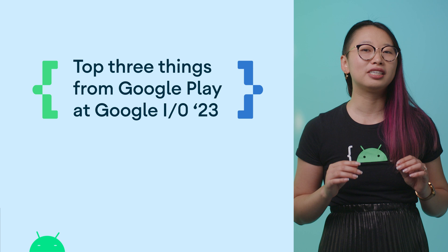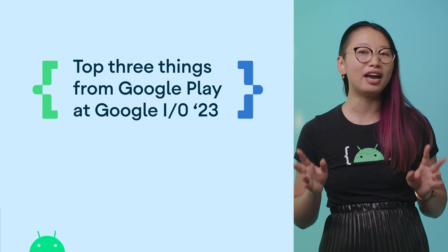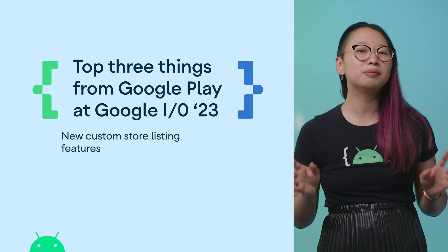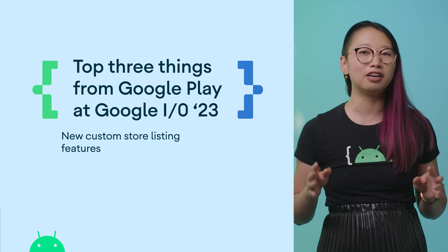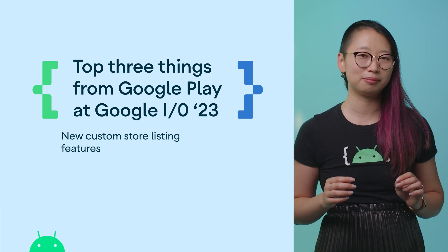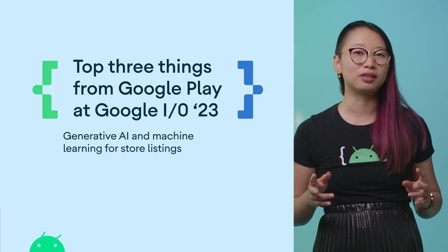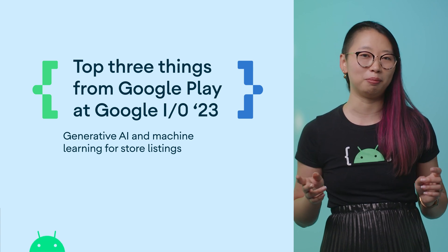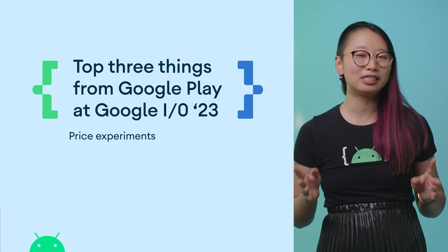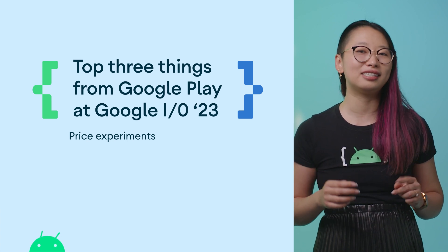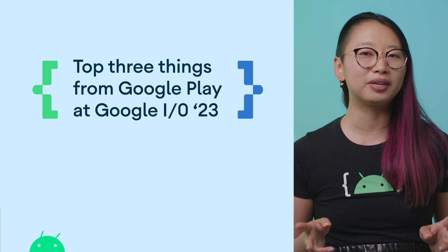Continuing our I/O coverage, we released a short video and blog detailing the top three things to know from Google Play at Google I/O 2023. New Custom Store Listing Features — we made three big updates to custom store listings, giving you ways to deliver personalized content to a wider audience. Generative AI and machine learning for store listings lets you draft better content with less effort with our new experimental integrated AI helper. For Price Experiments, we launched price experiments for in-app products, which allow you to A/B test price points to better reach both new and existing buyers. Check out the blog, video, and the Google Play at Google I/O 2023 playlist to learn more.